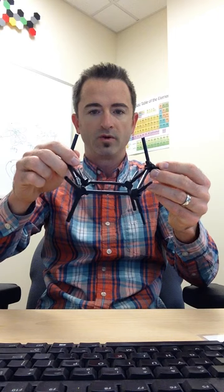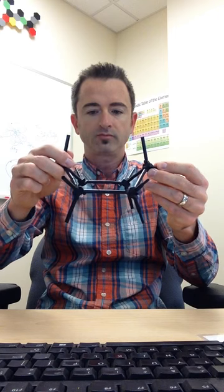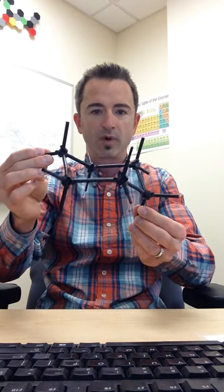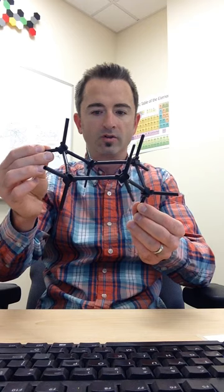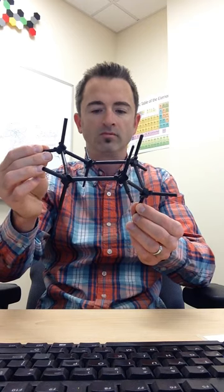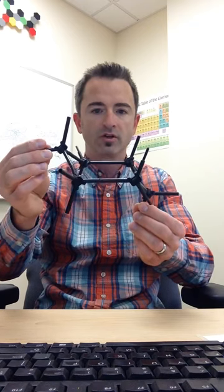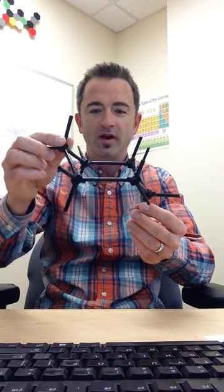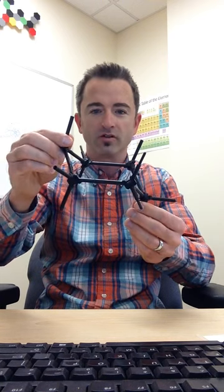Well, if we pull the other side down, what we've now done is essentially what we call a ring flip. So now we're back to the original chair conformation, but it's the opposite one. So I want you to see what happens as we go from one chair to the other chair.